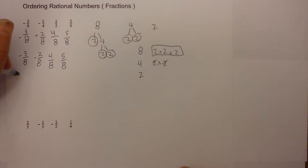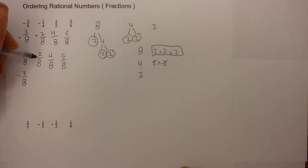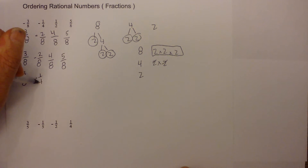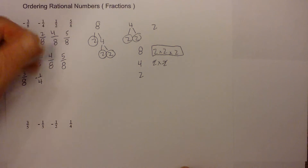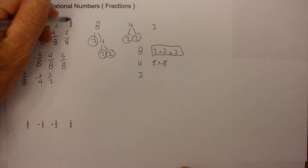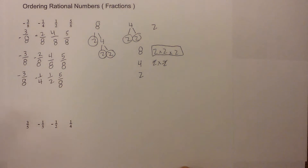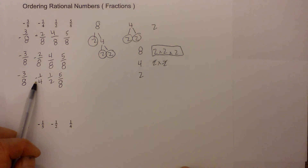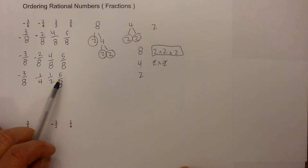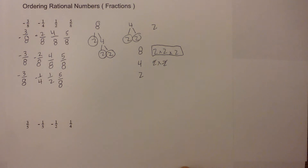The last step is to write the equivalent fractions we started with. Two eighths was one fourth, four eighths was one half, and five eighths was five eighths. So from least to greatest we have: negative three eighths, negative one fourth, one half, and five eighths. What I did was find a common denominator and then convert each fraction.